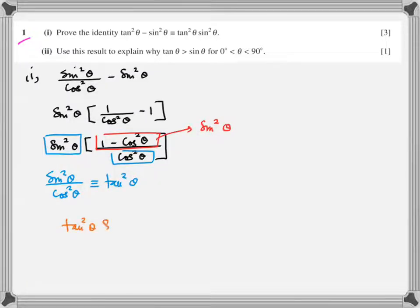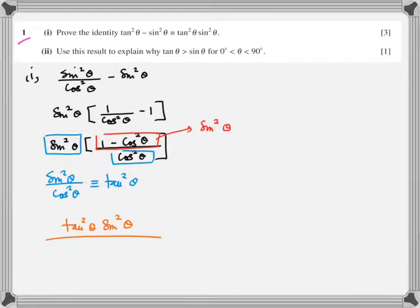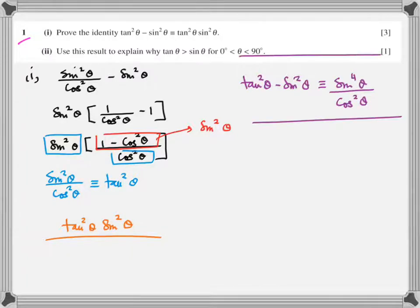So therefore this comes out to be tan squared theta times sine squared theta. In some books you might have seen a slight variation of this identity: tan squared theta minus sine squared theta is identical to sine to the power 4 theta over cos squared theta. It's the same thing — if you multiply sine with sine that becomes sine to the power 4 theta. Just to give you an idea that you might come across the same identity with the same left-hand side but a different right-hand side.